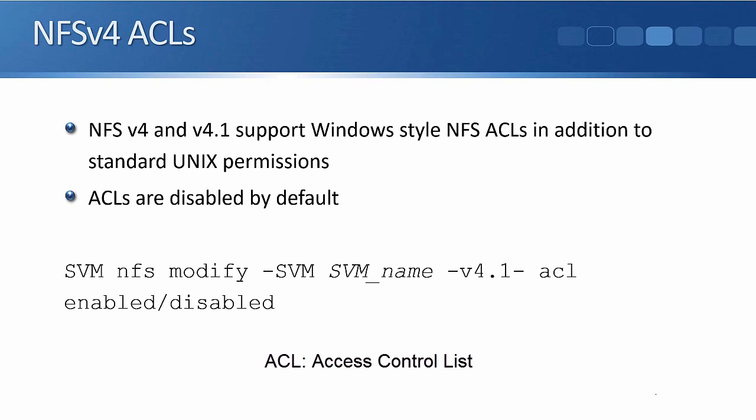Another feature supported in NFS versions 4 and 4.1 is support for Windows-style NFS ACLs in addition to standard Unix permissions. This gives a lot more flexibility in configuring permissions for users and groups. ACLs are disabled by default. To turn them on at the command line: `vserver nfs modify -vserver <SVM_name> -v4.1-acl enabled|disabled`.